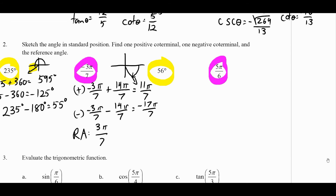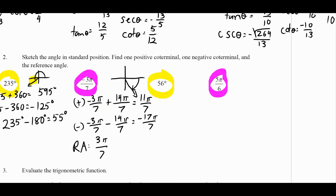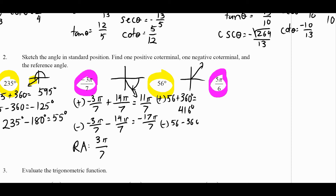For 56 degrees, which is in the first quadrant: positive coterminal is 56 plus 360, giving 416. Negative coterminal is 56 minus 360, giving negative 304 degrees. The reference angle is already written as the angle itself — 56 degrees.